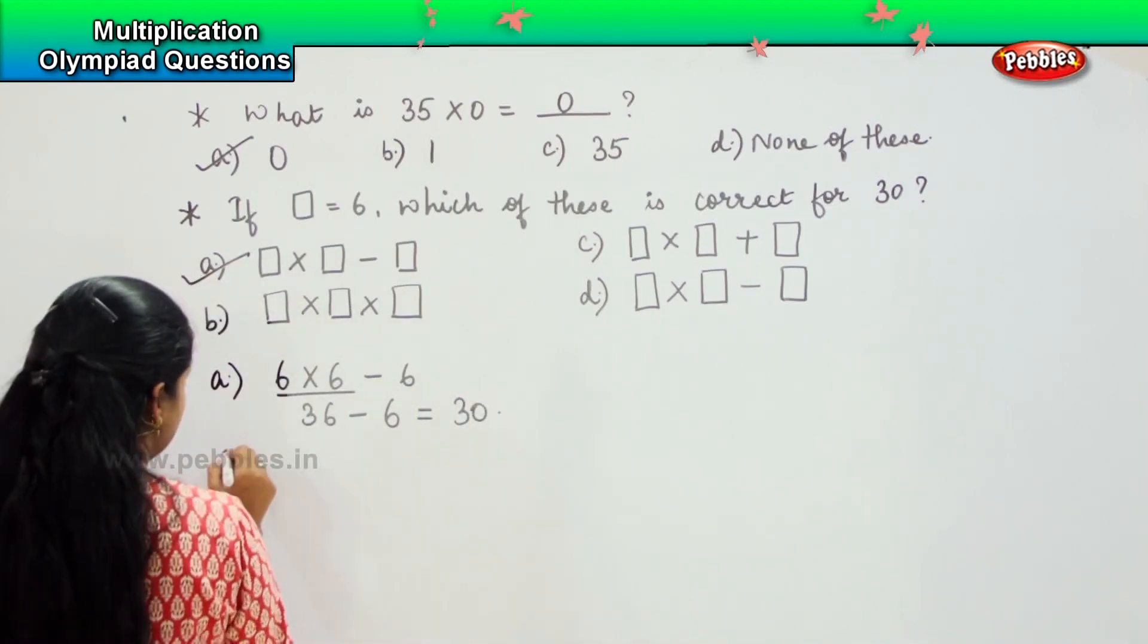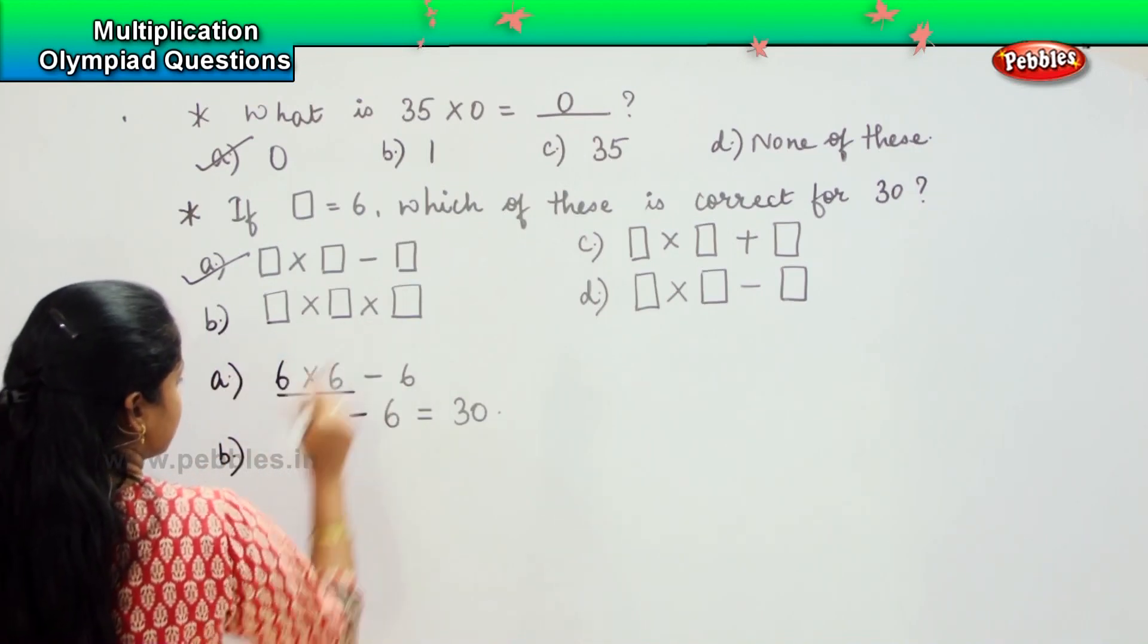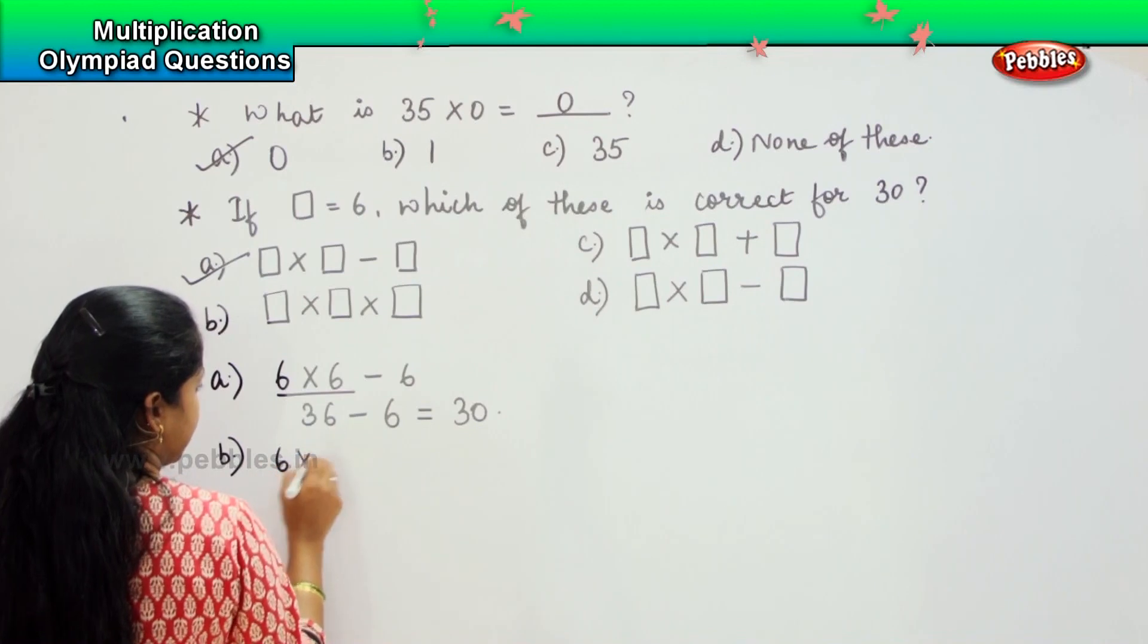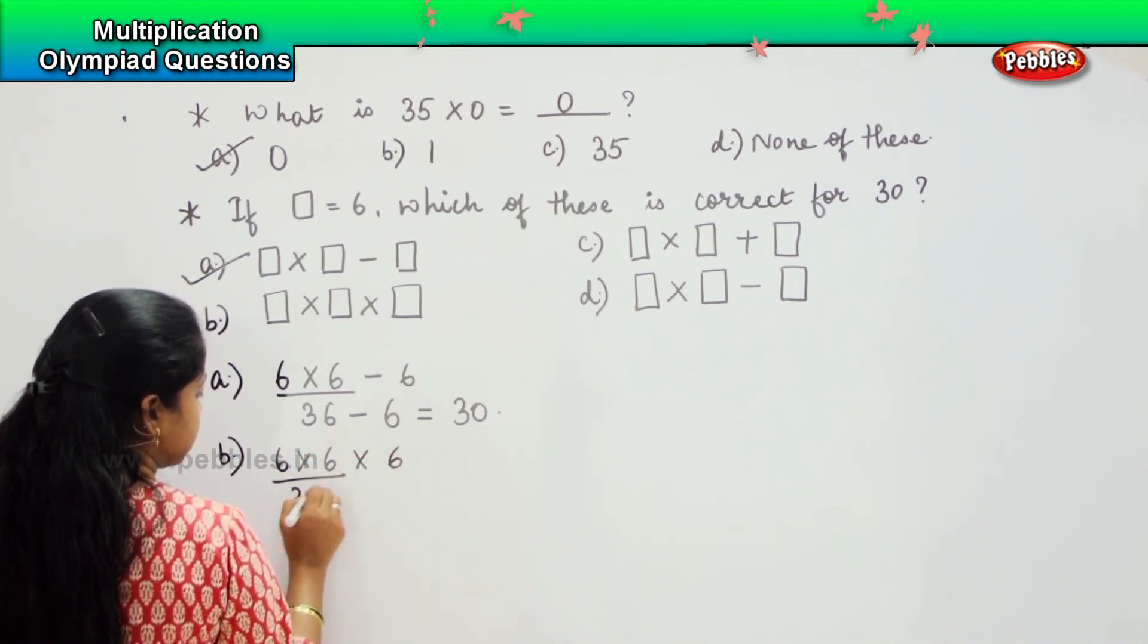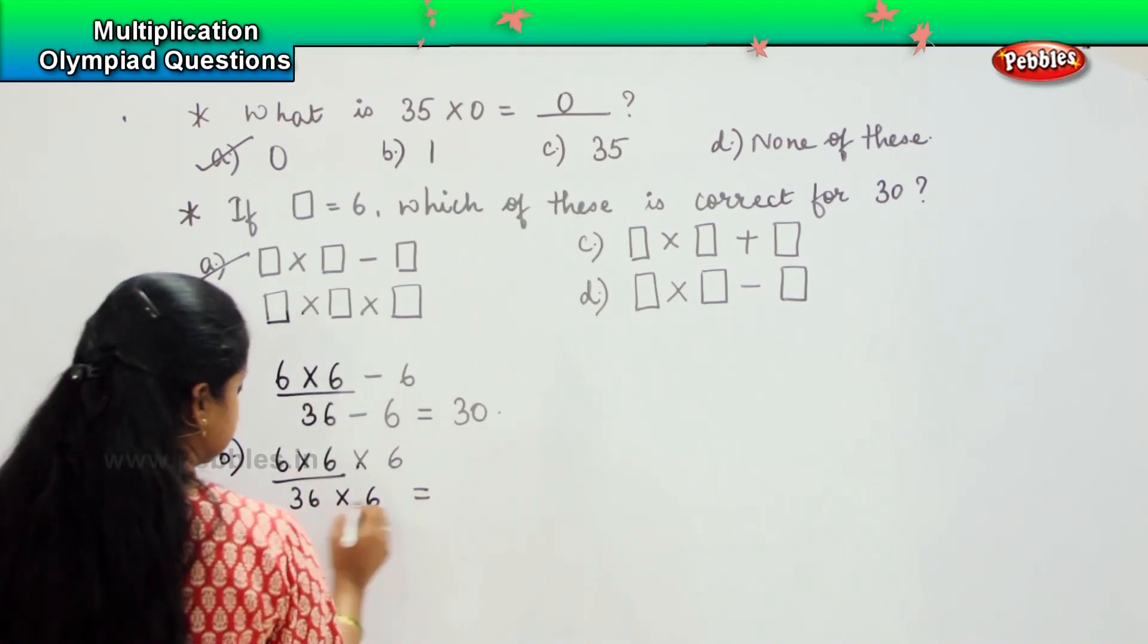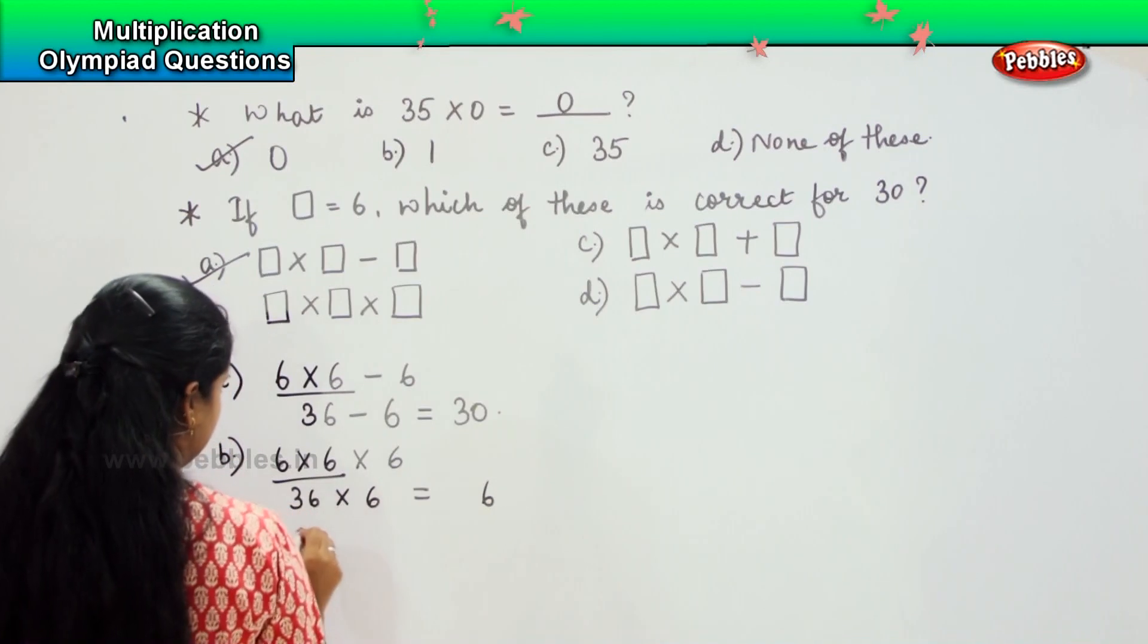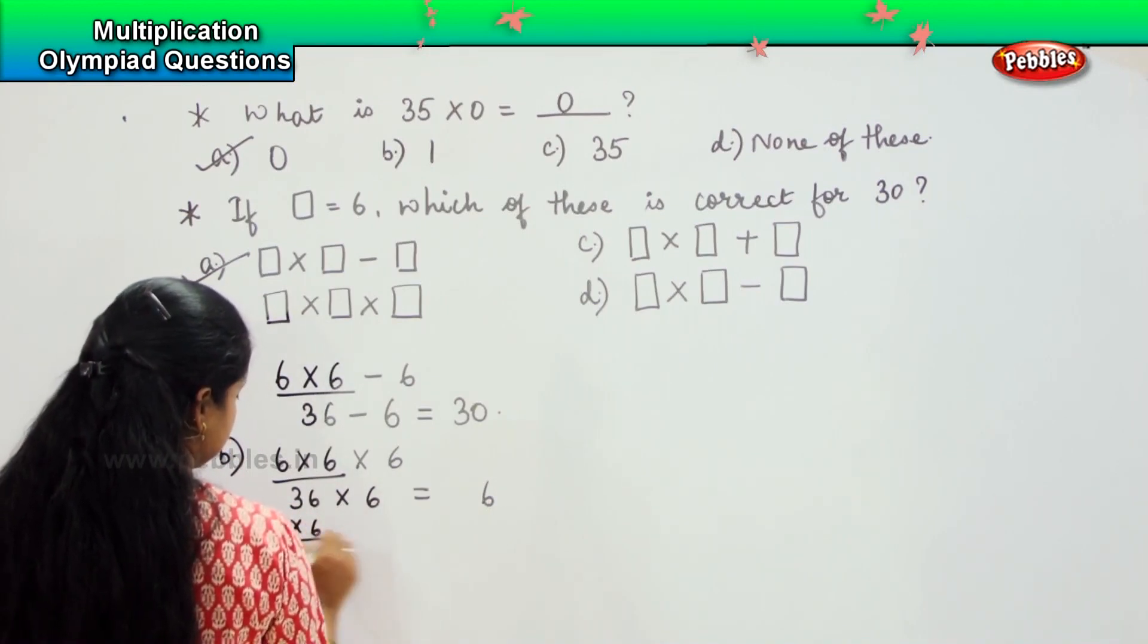Shall we solve the second one? B says square into square into square, which is 6 into 6 into 6. So 6 into 6 is 36. So 36 into 6 is how much? 6 sixes are 36. We will solve it here. 36 into 6, right?